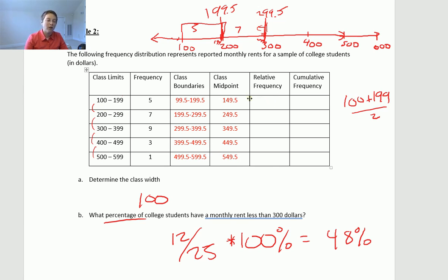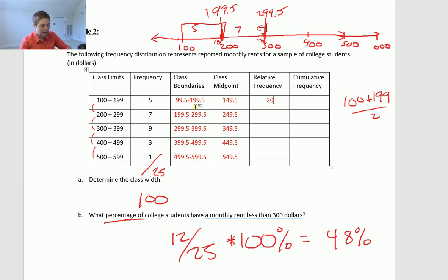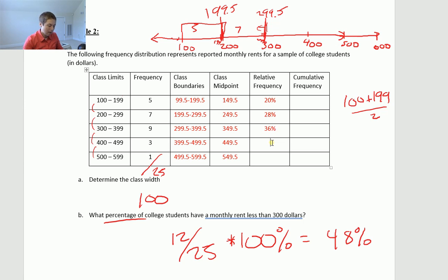Relative frequency — remember, relative is relative to the total. The total frequency here is 25: 5 plus 7 plus 9 plus 3 plus 1 equals 25. So what is 5 relative to 25? Take 5 divided by 25 — a lot of times we report relative frequency as a percentage, so that would be 20%. Then 7 divided by 25 times 100 is 28%. 9 divided by 25 times 100 is 36%. 3 divided by 25 times 100 is 12%. And 1 divided by 25 times 100 is 4%.